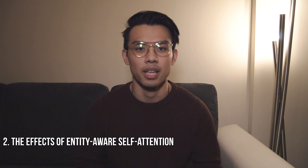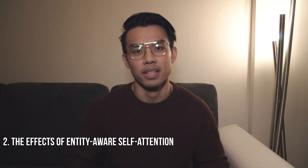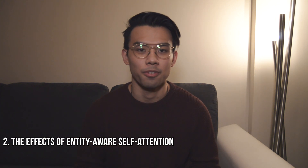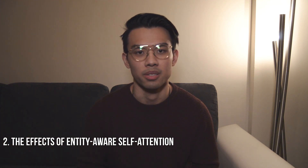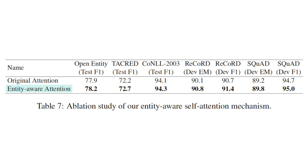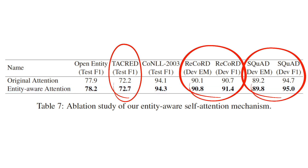The second ablation study covers the effects of entity-aware self-attention. Here we compare the performance of entity-aware self-attention with the traditional self-attention mechanism. The entity-aware self-attention consistently outperforms the original mechanism across all five entity-related tasks, with particularly large improvements on relation classification and QA tasks. This is believed to be because the mechanism allows the model to better capture the relationships between entities.